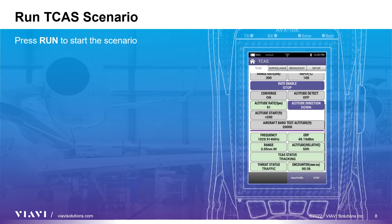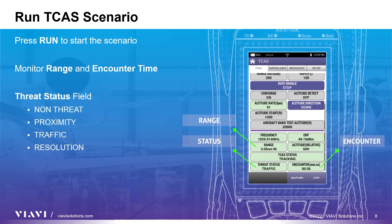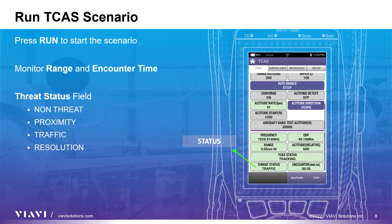Once everything is set up, press the Run key to start the scenario. Scroll down to view the range, threat status, and encounter time fields to correlate with what is being displayed on the TCAS unit under test. Regarding the threat status field: non-threat is displayed when range is greater than 4 nautical miles and encounter time is greater than 40 seconds. Proximity will be displayed when range is less than 4 nautical miles and encounter time is greater than 40 seconds. Traffic will be displayed when encounter time is less than 40 seconds and greater than 25 seconds. And resolution will be displayed when encounter time is less than 25 seconds.